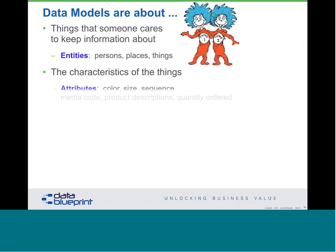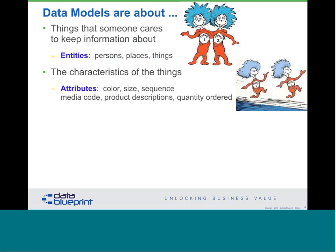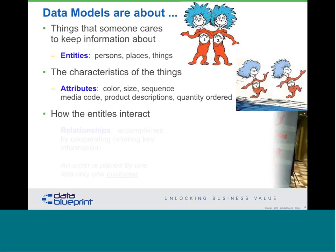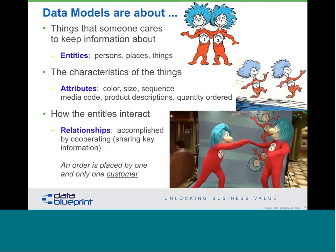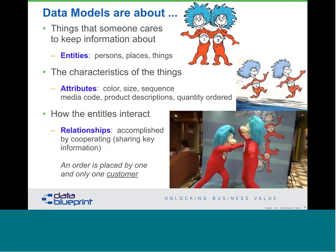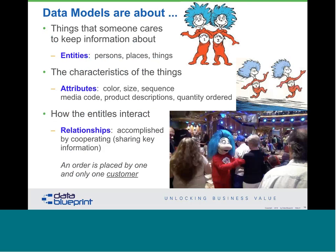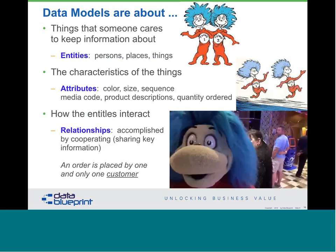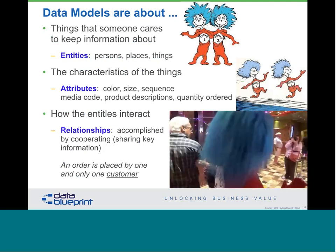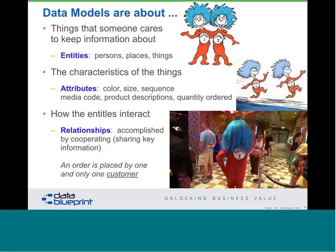Models are about things that somebody cares to keep information about. First, we recognize entities — the persons, places, or things, the nouns in our IT development. Then we talk about attributes: characteristics of an entity, including descriptive things like color, size, sequence, et cetera. Finally, we get to the relationships between those various things — this is how we do all the sharing we're trying to do. For example, an order is placed by one and only one customer. That may be a business rule, but it's enforced by relationships built on the structure of specific entities and attributes.